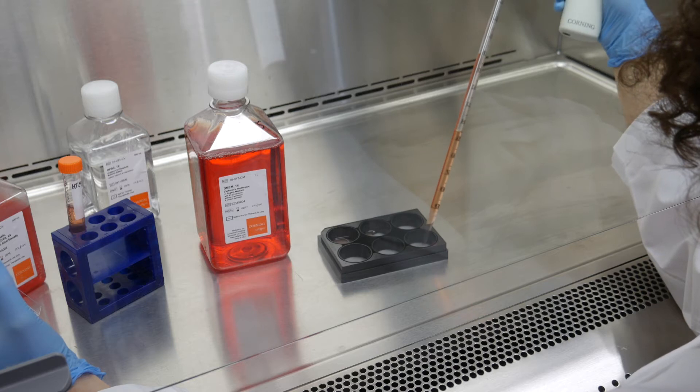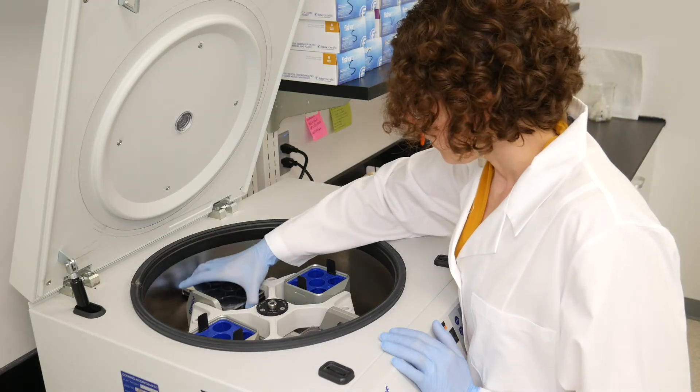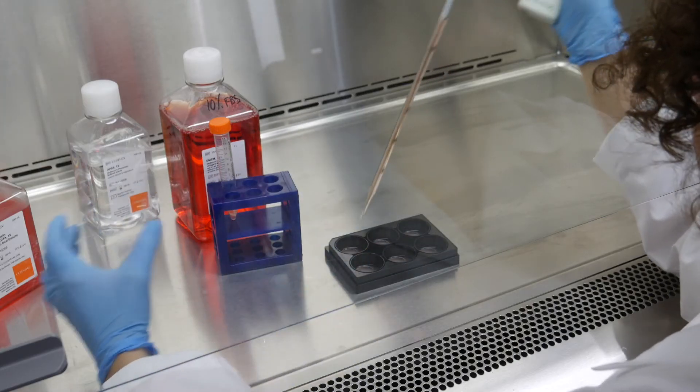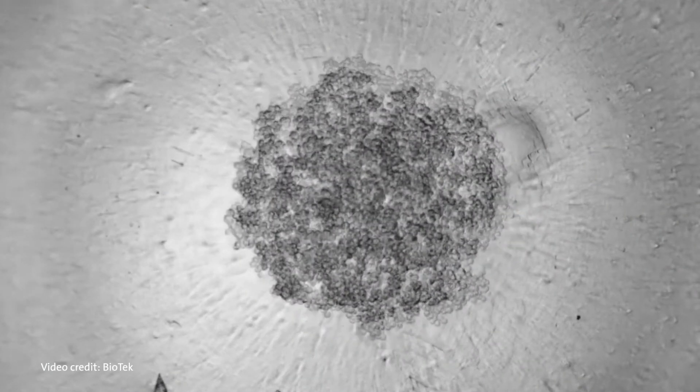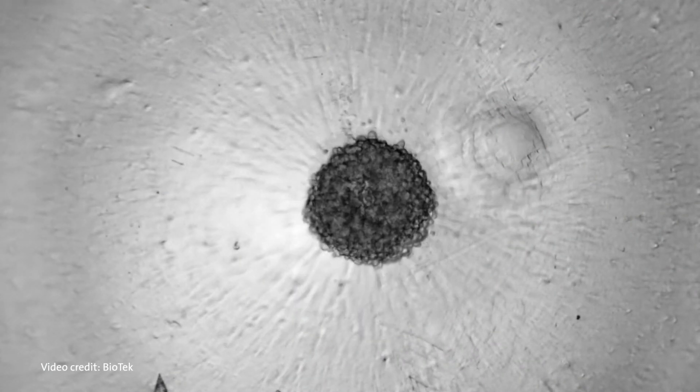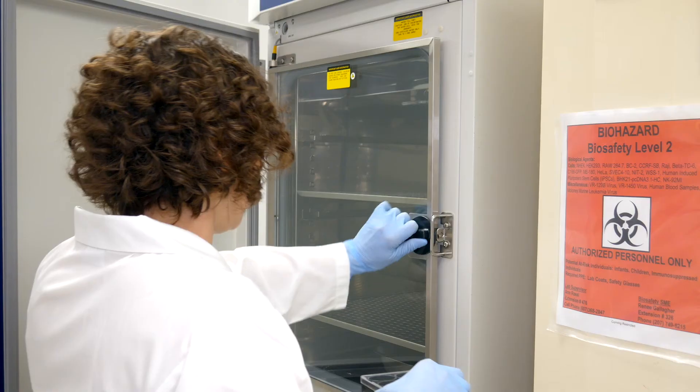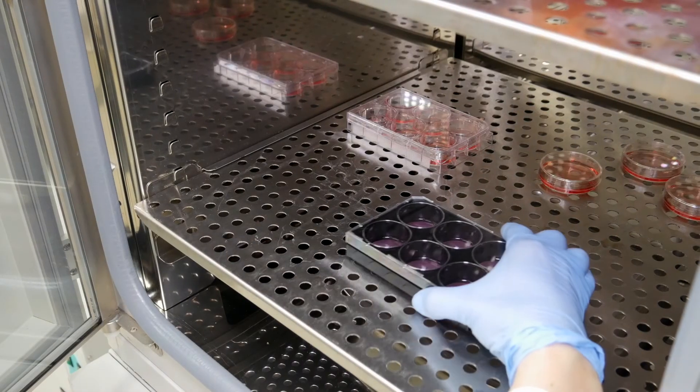To begin, add medium to your L-plasia plate, then centrifuge. You can then plate your cells. 3D multicellular spheroids will form in the micro-cavity wells. You can culture your spheroids for 21 or more days.